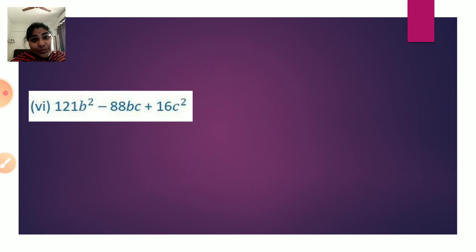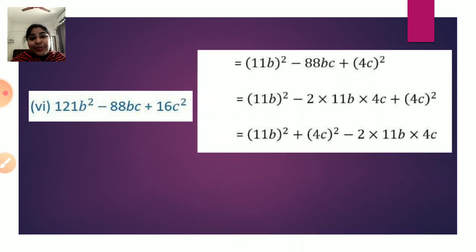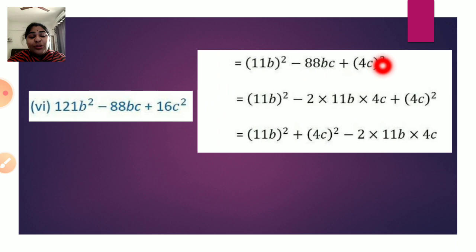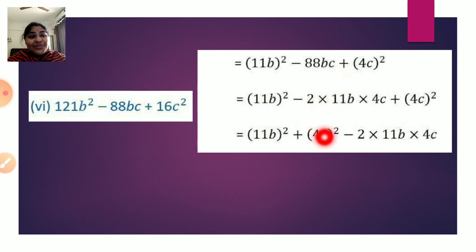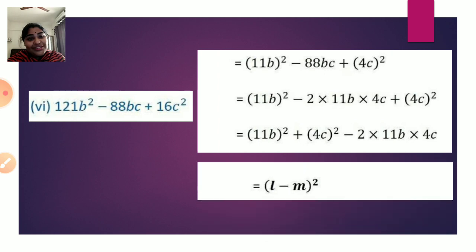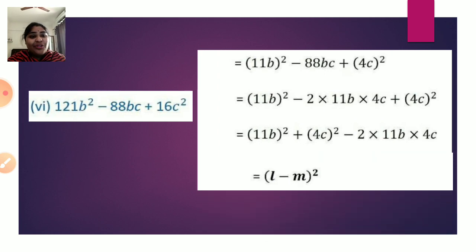The sixth sum is 121b² - 88bc + 16c². We write 121b² as (11b)² and 16c² as (4c)². Checking the middle term: 2 × 11b × 4c = 88bc, and it is negative. This is in the form a² - 2ab + b², so using the identity this equals (11b - 4c)².